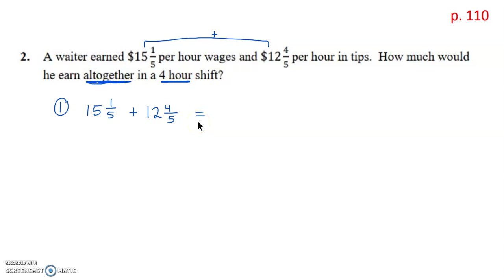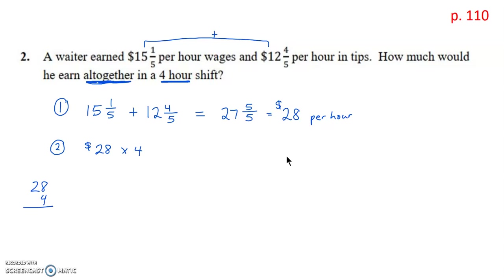We don't need to convert to improper fractions here. Adding the numerators: 1 plus 4 is 5 over 5. Adding the whole numbers: 15 plus 12 is 27. And 27 and five-fifths equals 28 — so this waiter earns $28 per hour. Step two: multiply $28 times 4. Eight times 4 is 32, carry the 3; 4 times 2 is 8, plus 3 is 11. That is $112 — this person will earn $112 in a four-hour shift.